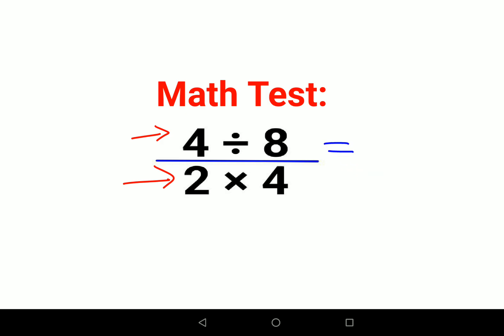So we have 4 upon 8, so 4 upon 8 that gets cancelled. 4 divided by 8 is nothing but 1 by 2. So I'll write it as 1 upon 2.